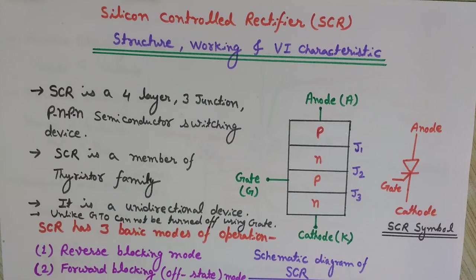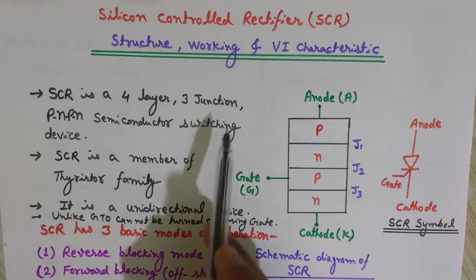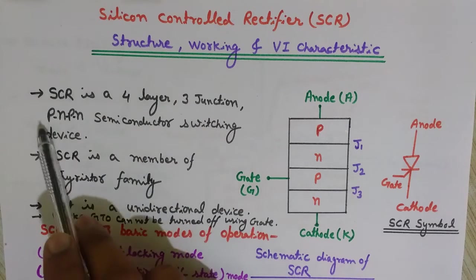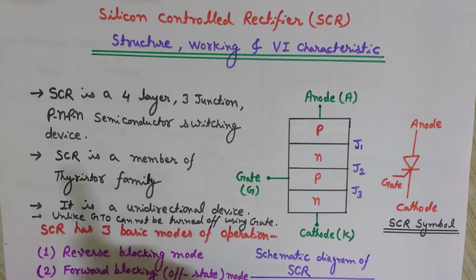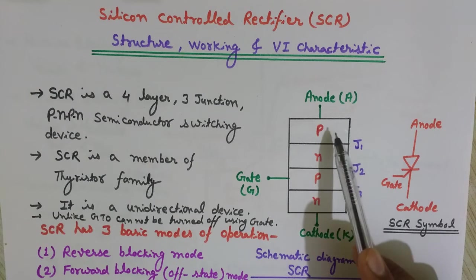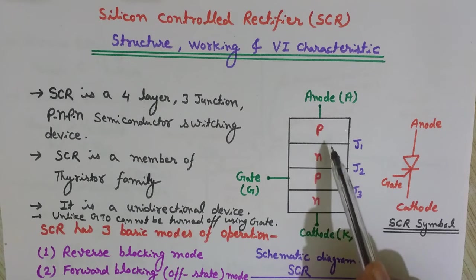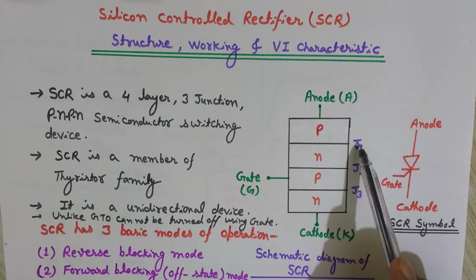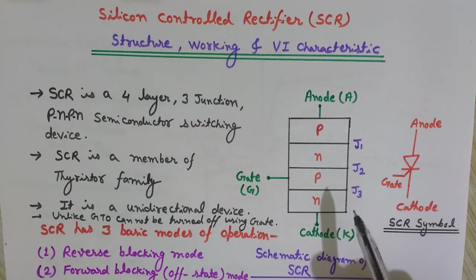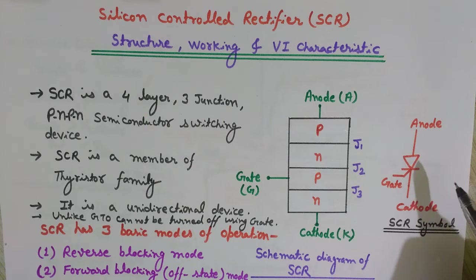Silicon Controlled Rectifier, SCR, is a four-layer, three-junction PNPN semiconductor switching device. You can see in this schematic diagram that it is a four-layered device — layers one, two, three, four — and these four layers, after joining, form three junctions: junction J1, junction J2, and junction J3.